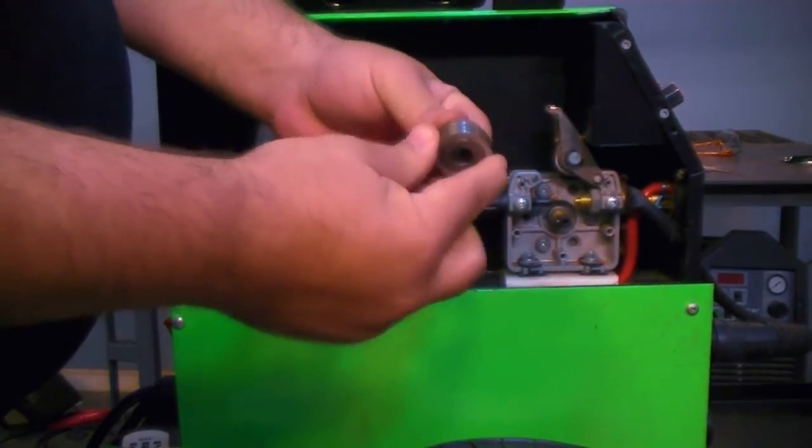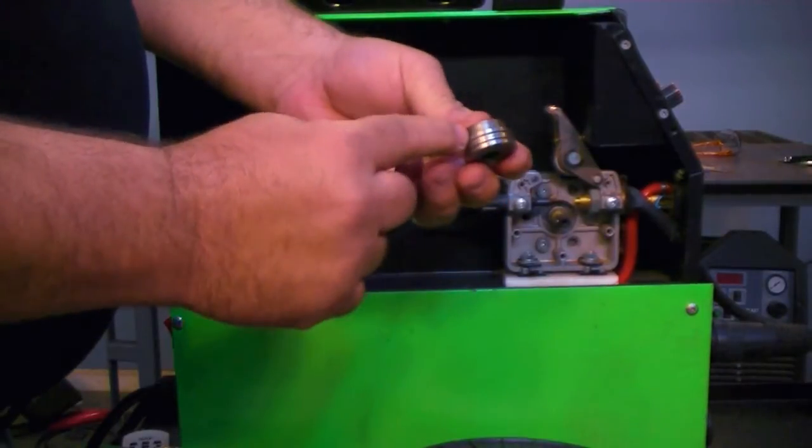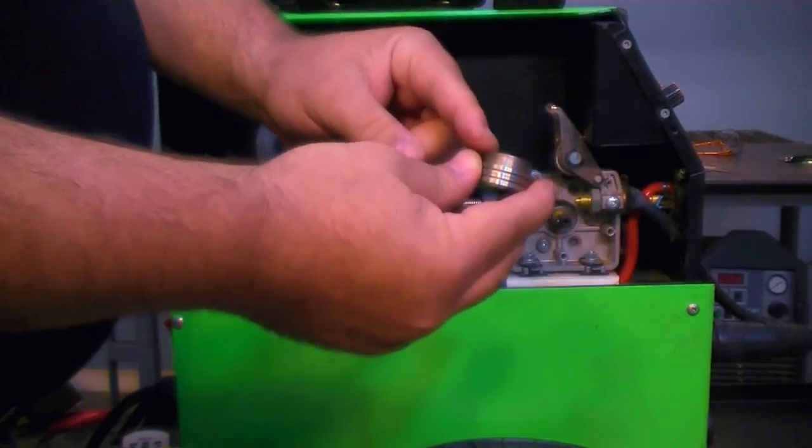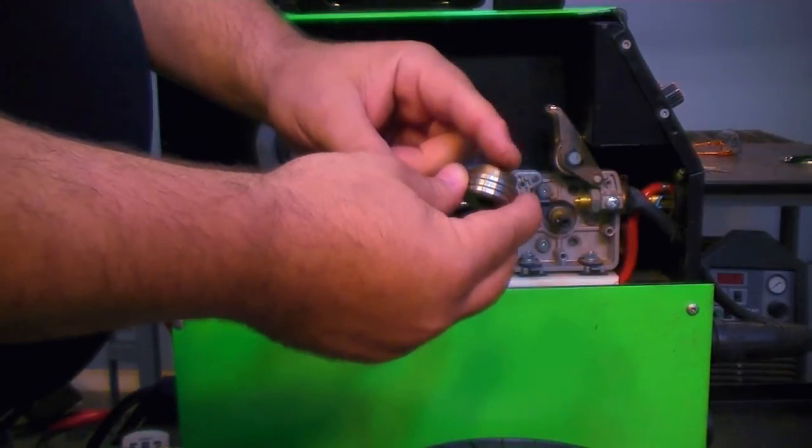And you just swap it over. And then you'll have your drive roll engaged in the right side when you put it back on. And make sure that you take note of which side the flange is on when you take it off.